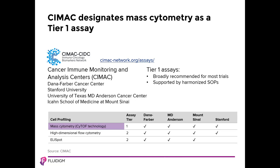Cancer Immune Monitoring and Analyzing Centers, or CMAC, have designated mass cytometry as a Tier 1 assay. The network defines Tier 1 assays as broadly recommended for most trials and supported by harmonized SOPs. Mass cytometry is currently used for cell profiling at Dana-Farber Cancer Center, Stanford University, MD Anderson Cancer Center, and the Icahn School of Medicine at Mount Sinai.